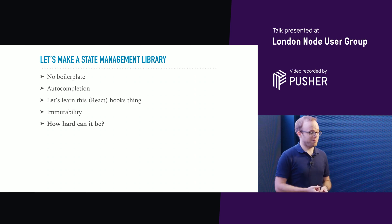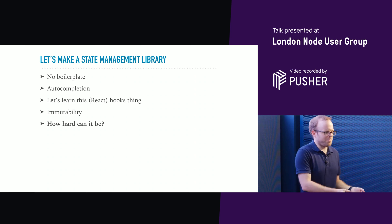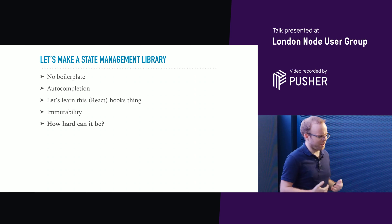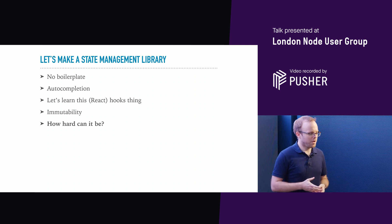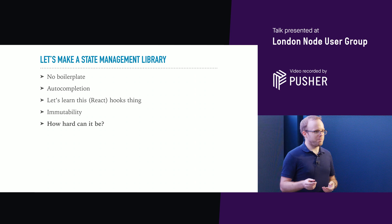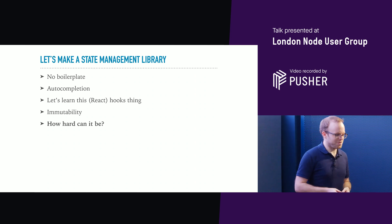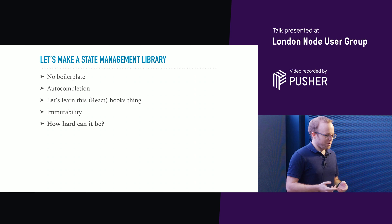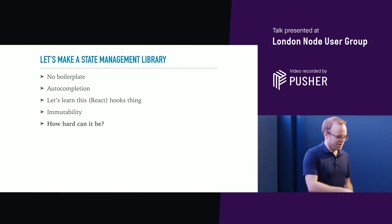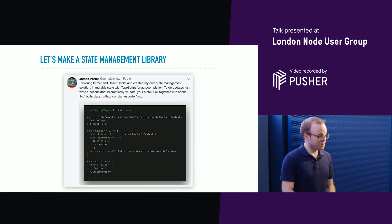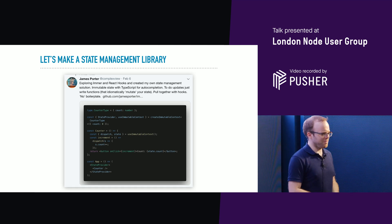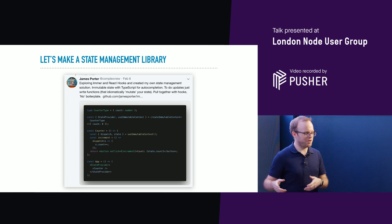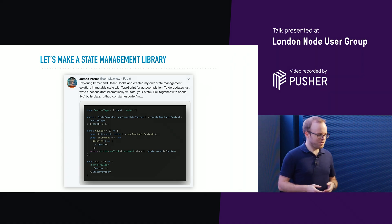I didn't want any of that boilerplate stuff. I wanted autocompletion — I don't want to have to remember stuff. The computer can remember stuff perfectly; I can't. Let's offload that to the computer, let's reduce that cognitive load. And React Hooks was about to come out, in beta, going to come out in a few weeks — I should learn about this thing. And immutability — that's awesome, let's have that. So how hard can that be? It turned out it wasn't that hard. It took, I think, like an hour and a half.